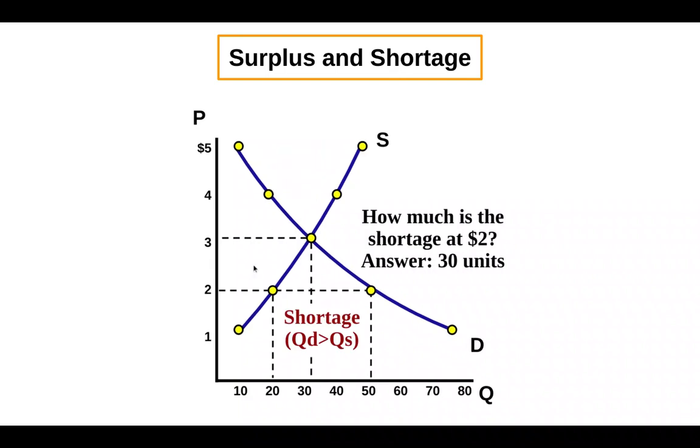The opposite case is what we would call a shortage, where the seller has a price that is below equilibrium. Now, of course, this makes the buyers happy. They're going to want to buy, in this case, 50 units instead of 30, the equilibrium quantity. However, sellers are only going to want to sell 20 here instead of 30. And so you have a shortage here where the quantity demanded is greater than the quantity supplied by 30 units.